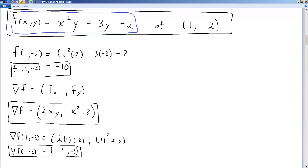You evaluate the gradient at the chosen point. So just substitute x equals 1, y equals -2. And you get the gradient evaluated at the point as -4, positive 4.